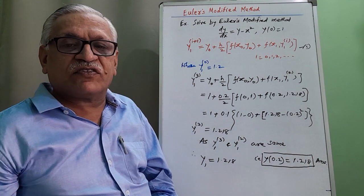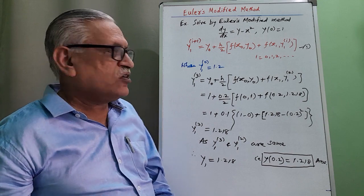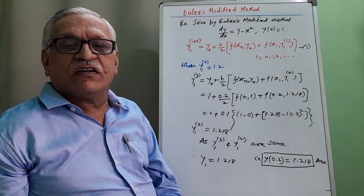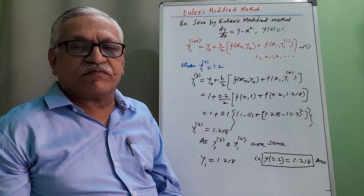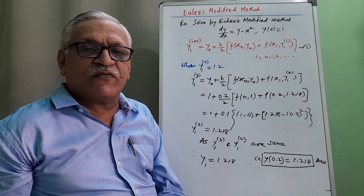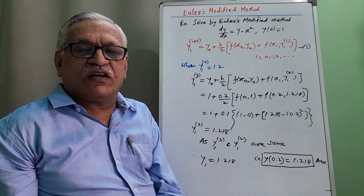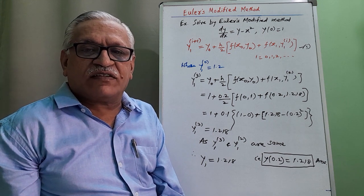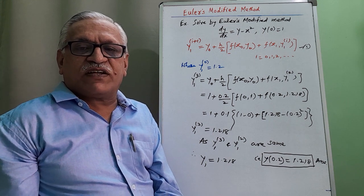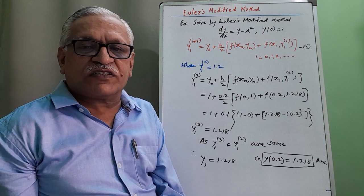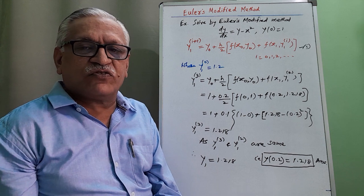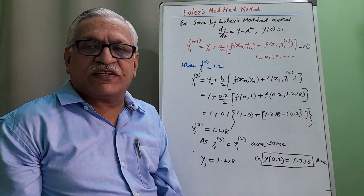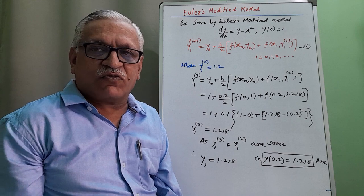This is the required value obtained by applying Euler's modified method. One more problem will be discussed in the next video. If you like the video, please share it and subscribe to the channel — press the bell icon to receive notifications for new videos. Thank you, thanks for watching.